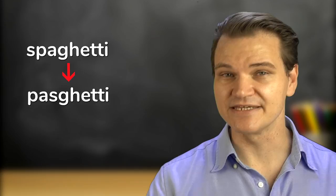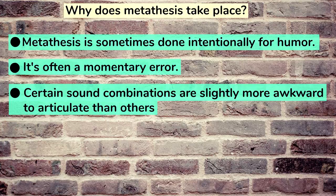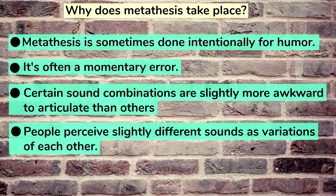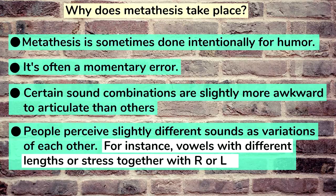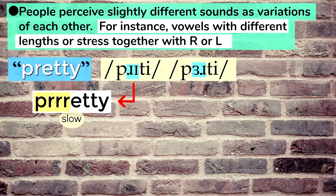But metathesis is often enduring, with shifts in words or sound combinations becoming a part of that dialect or language. This could happen because certain sound combinations are slightly more awkward to articulate than others, and people most naturally look for the path of least resistance. Also, it could be that people perceive slightly different sounds as variations of each other — for instance, vowels with different lengths or stress together with R or L sounds. Take the word 'pretty', which is pronounced as 'purty' in some dialects. If you say 'pretty' slowly, between the P and the R it sounds like there's a slight vowel sound there, like 'er'.